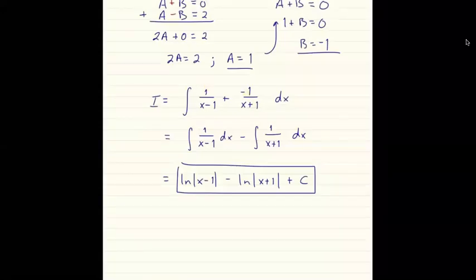To finish, we integrate the decomposed form: the integral splits into the integral of 1/(x−1) dx minus the integral of 1/(x+1) dx. Both are 1/(x−b) forms, so the results are natural log of |x−1| minus natural log of |x+1| plus C. That completes our first partial fraction decomposition example.